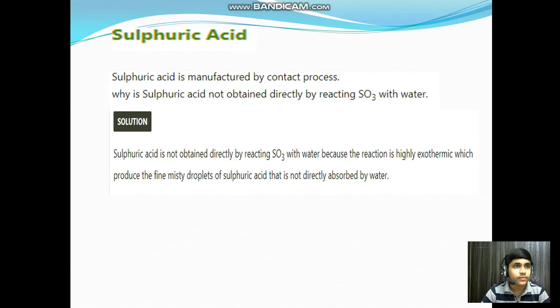Chapter: Sulfuric acid. Sulfuric acid is manufactured by contact process. Why is sulfuric acid not obtained directly by reacting SO3 with water? Solution: Sulfuric acid is not obtained directly by reacting SO3 with water because the reaction is highly exothermic which produces fine, misty droplets of sulfuric acid that is not directly absorbed by water.